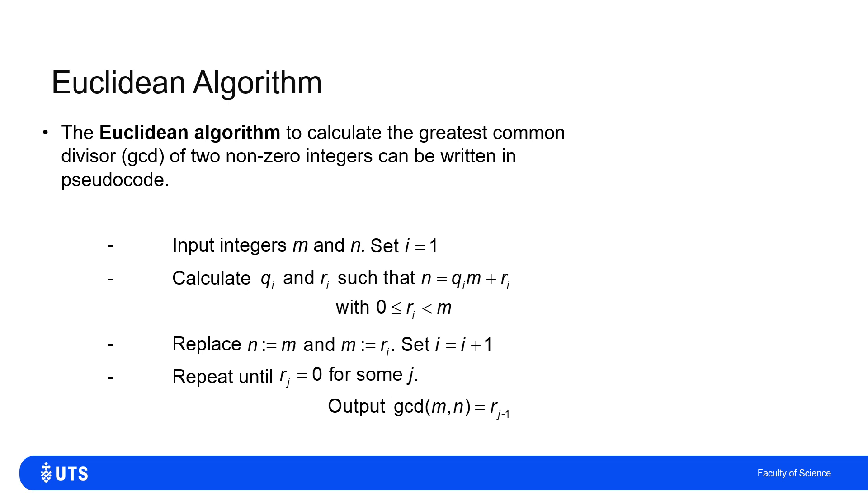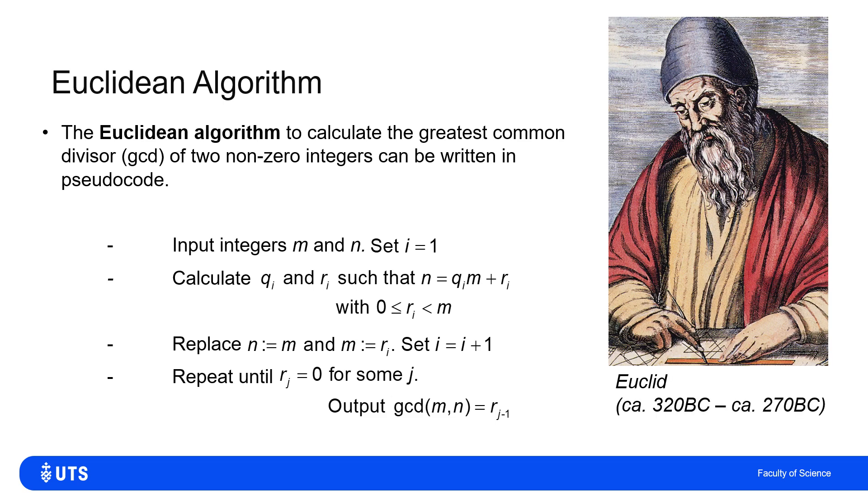And when I've got that, I can output that the greatest common divisor of M and N is Ri minus 1. The last non-zero remainder that I had has to be the greatest common divisor. Now, as the name suggests, that's attributed to our favorite long-dead, slightly disappointed-looking Greek mathematician, Euclid.